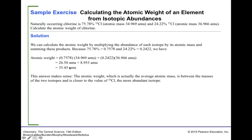This answer makes sense because the atomic weight, which is actually the average atomic mass, falls between the masses of the two isotopes and is closer to chlorine-35. It is closer to 35 because that isotope has the highest abundance. This is how you calculate the atomic weight of an element using isotopic abundance.